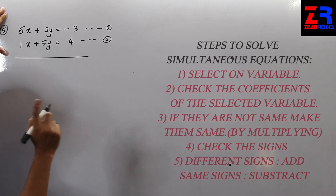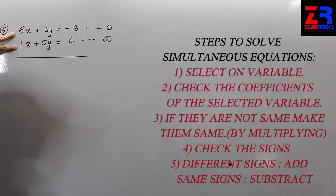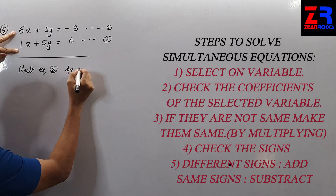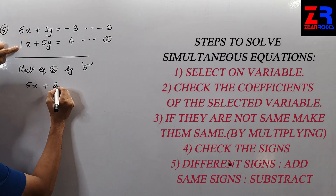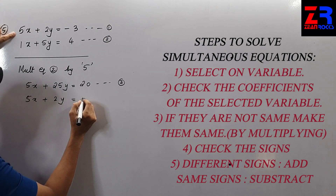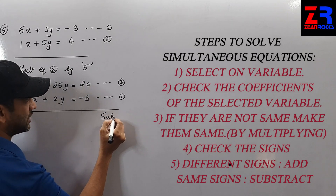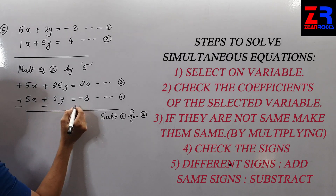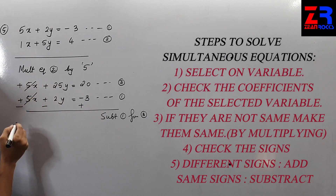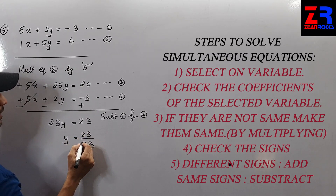Question 5: my first step is selecting a variable — x or y. The coefficients are not the same, so I will multiply equation 2 by 5 to make the x coefficients equal. This gives 5x + 25y = 20 — equation 3. Equation 1 is 5x + 2y = −3. Signs are the same, so subtract equation 1 from equation 3. 5x cancels. 25 − 2 = 23y. 20 − (−3) = 23. Therefore y = 23 ÷ 23 = 1.